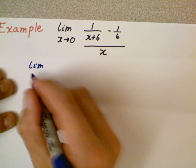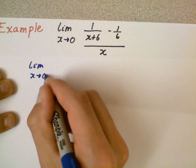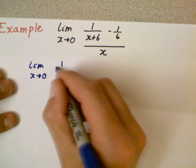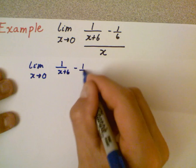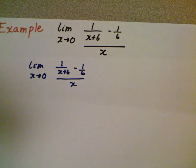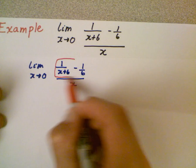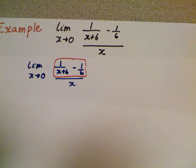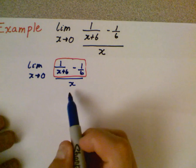So we have the limit, let me get my hand out of the way there, as x is approaching zero of 1 over x plus 6 minus 1 sixth all over x. Now the great thing here is we're going to just mess with this up almost all the way to the end. The x is going to just hang out and go for the ride.